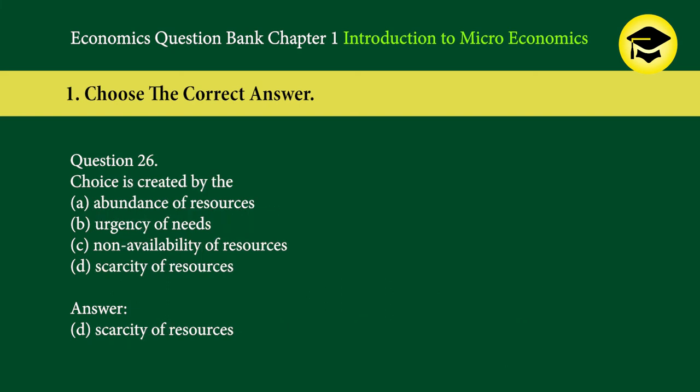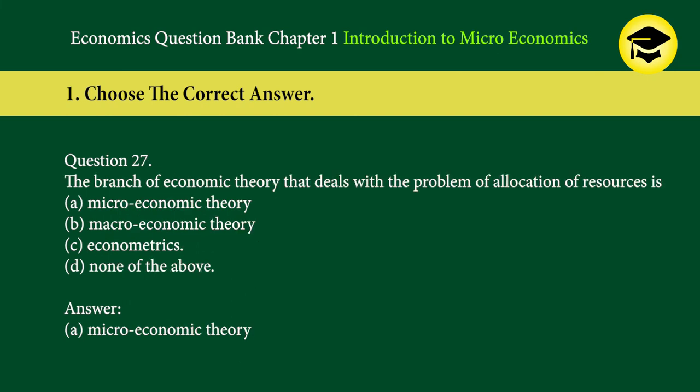Question 26: Choice is created by the — A. abundance of resources, B. urgency of needs, C. non-availability of resources, D. scarcity of resources. Answer: D. Scarcity of resources.